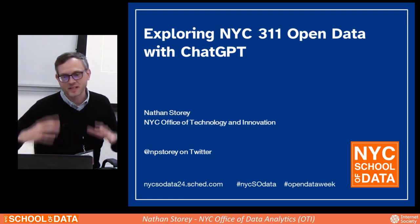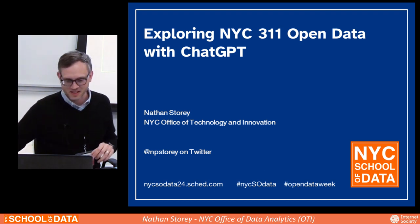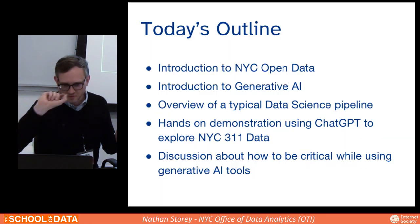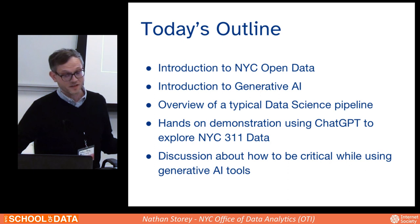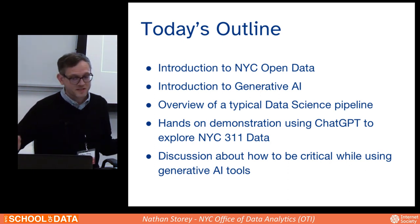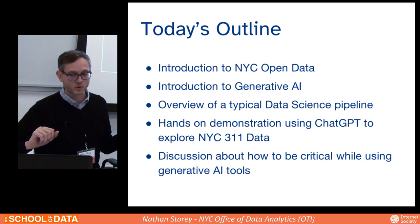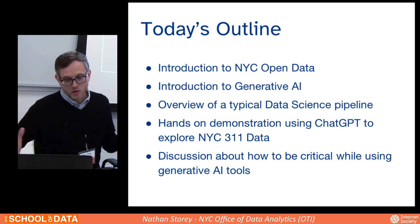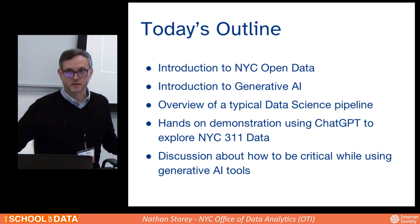This is an attempt at a kind of 102 class. The outline for today: I'm going to give a brief introduction to New York City open data, a brief introduction to generative AI, then an overview of a typical data science pipeline. Then we'll get into the bulk of the presentation, a hands-on demonstration using ChatGPT to explore New York City 3-1-1 data. And we'll close out with a discussion about how to be critical when using generative AI tools, particularly for data science.